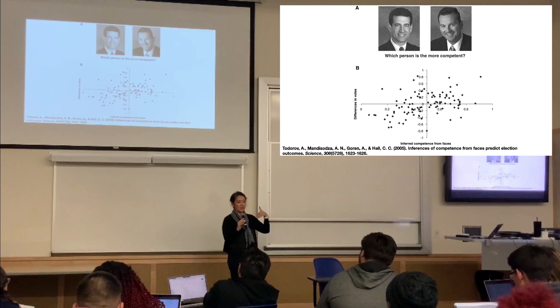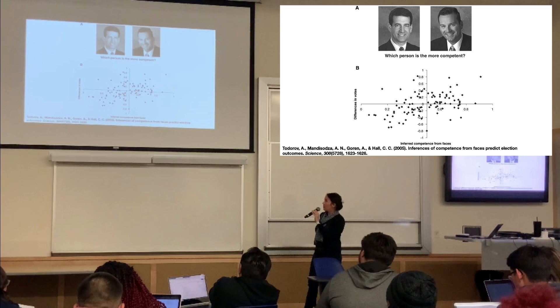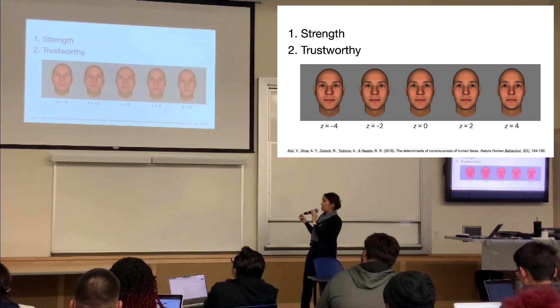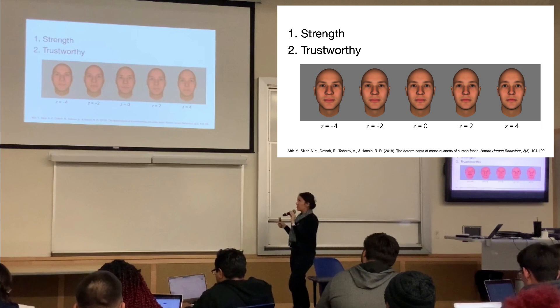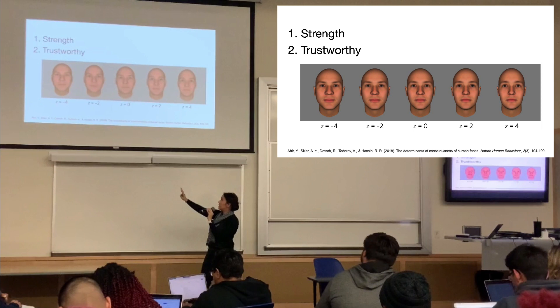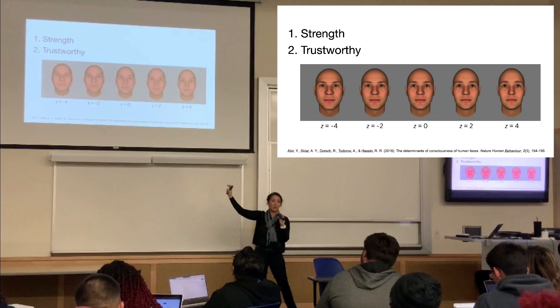They asked about confidence, and subsequent research unpacked that this rating — which predicted voting behavior — was a combination of strength and trustworthiness. They're able to manipulate both strength and trustworthiness independently. The faces shown here represent a scale where you can see how they morph from someone less trustworthy to more trustworthy by changing small components of the face.